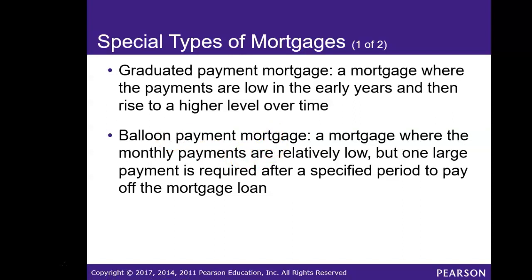With a balloon payment mortgage, which you see more on commercial property rather than residential property — so if you're trying to buy a commercial property like a barbershop or a restaurant — a balloon payment mortgage is one where the payments are relatively low, but then one large payment is required after a specified period to pay off the mortgage loan. For example, you may acquire a building as commercial property and they may give you a three-year mortgage over 36 months. You'll pay a monthly mortgage payment each month, but at the end of 36 months you have to pay off the entire mortgage balance or refinance it.